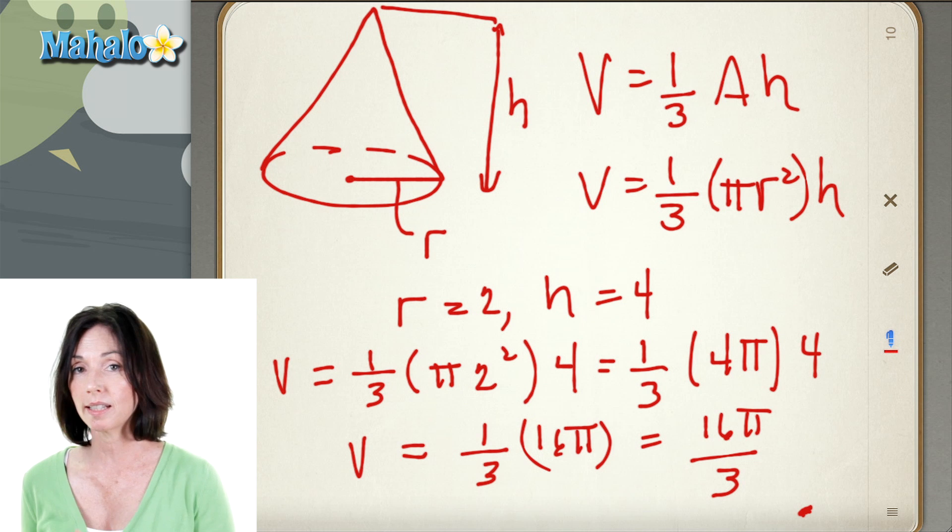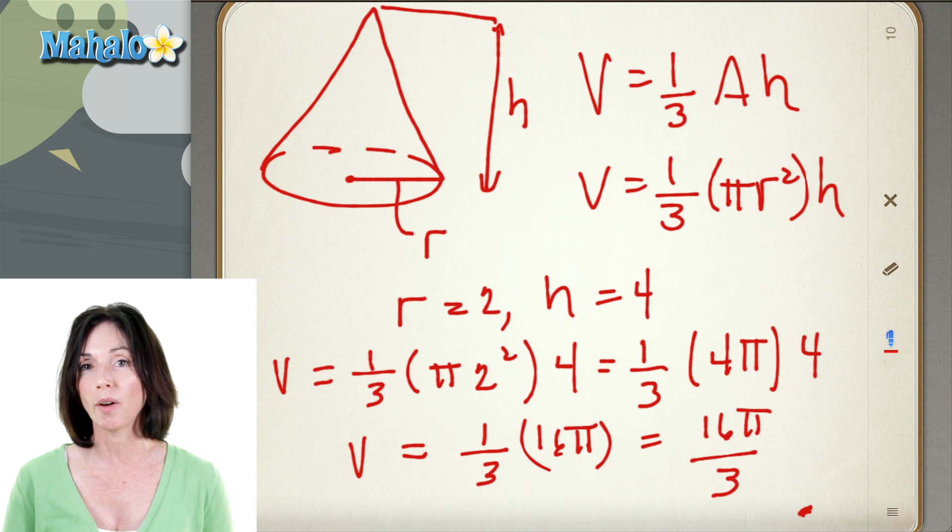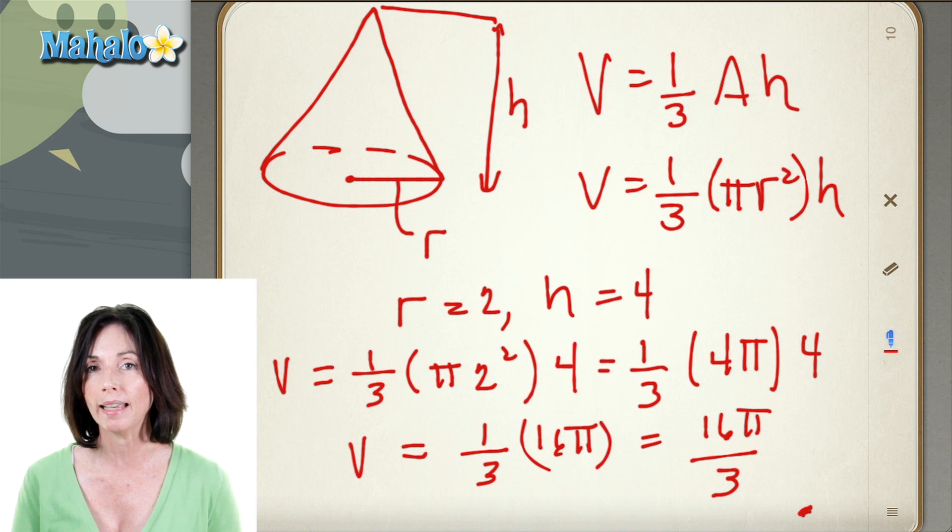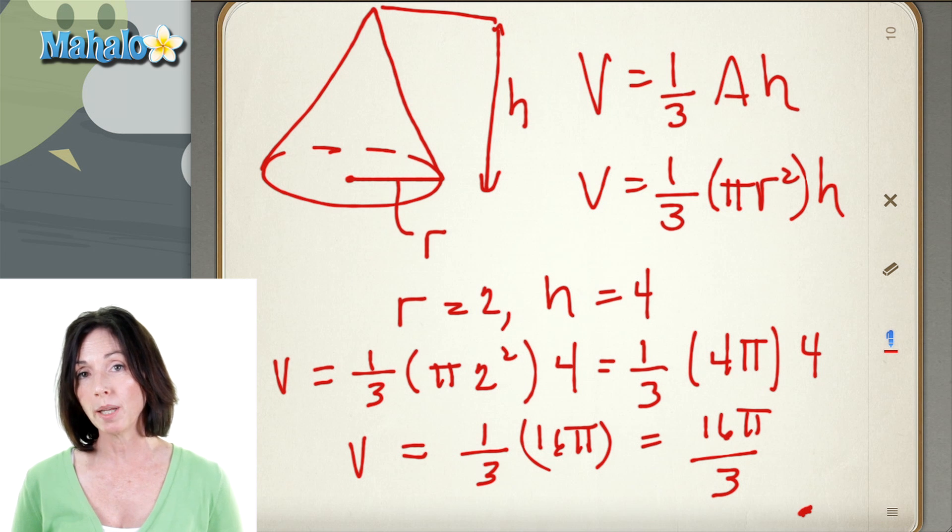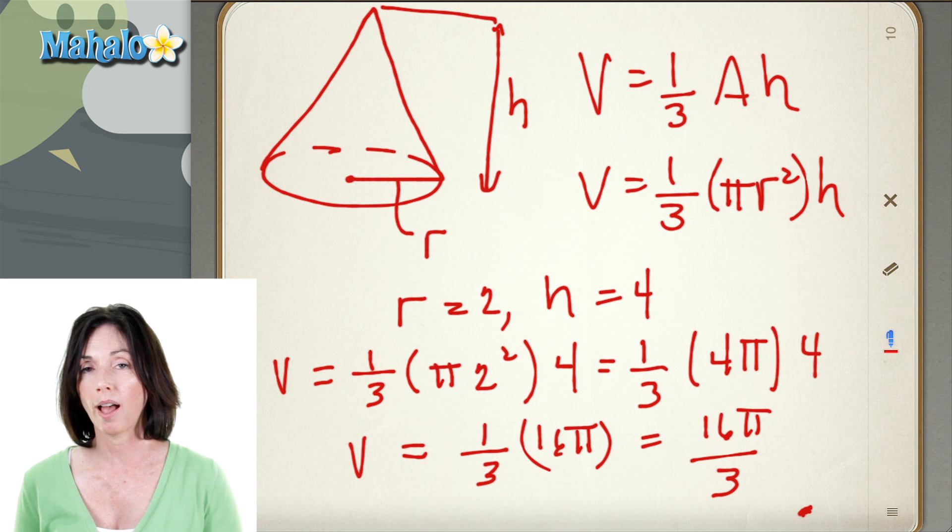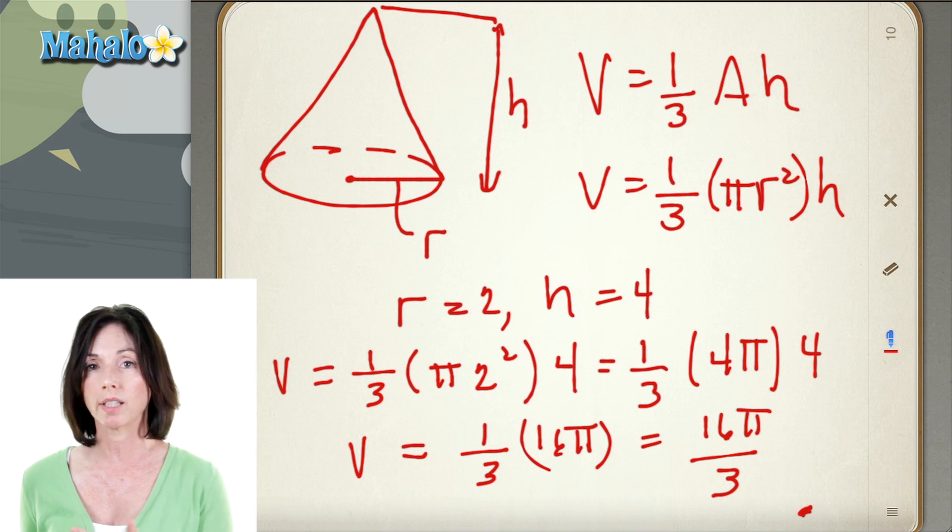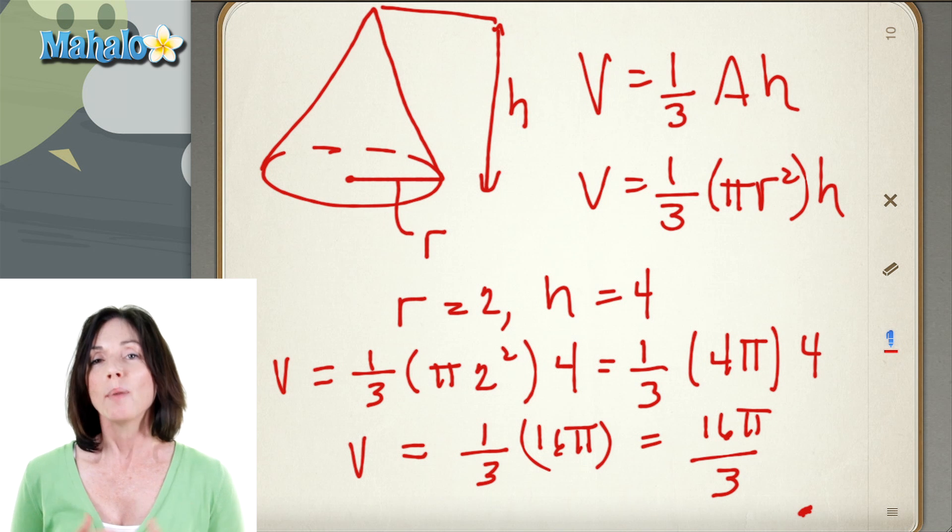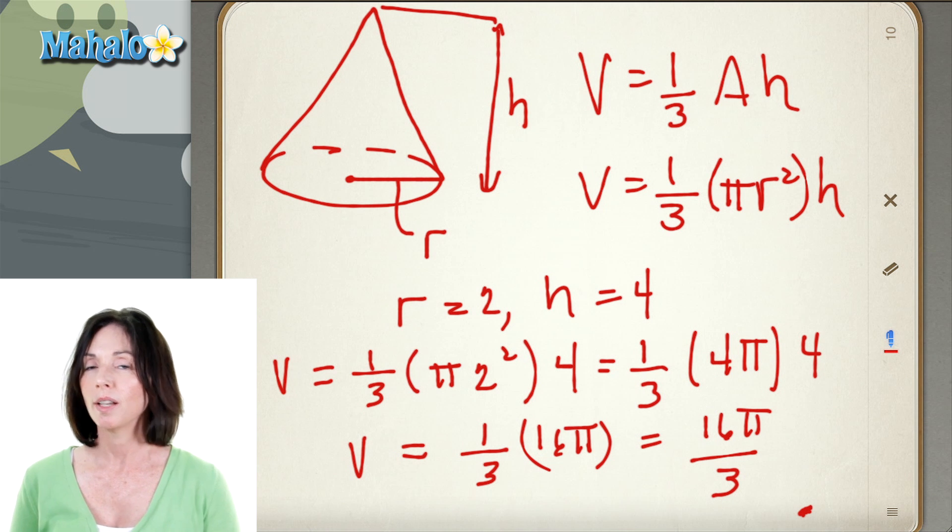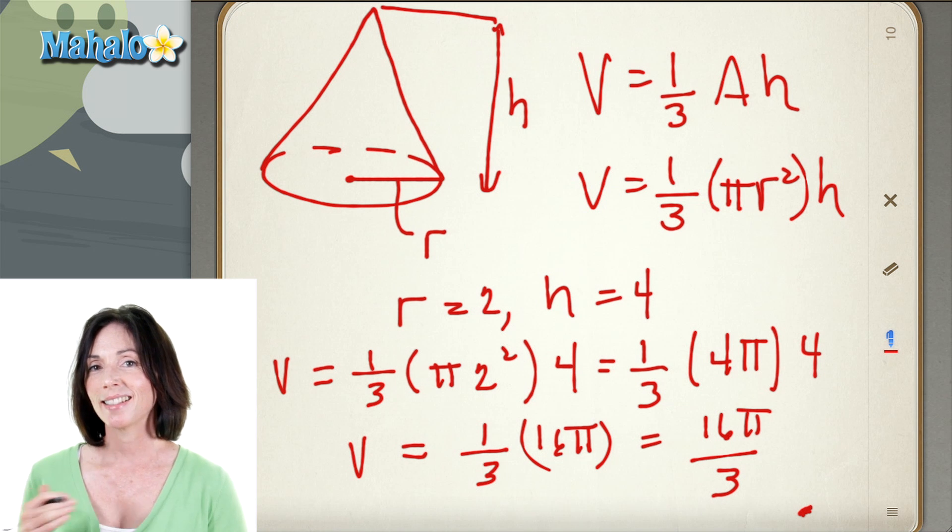Now this is a perfectly acceptable way to leave the volume of the cone. You can leave it in terms of pi. If you want a numerical approximation for it, you can approximate pi as 3.14 and just calculate the value out. But that's how you find the volume of a cone, one-third the area of the base times the height.